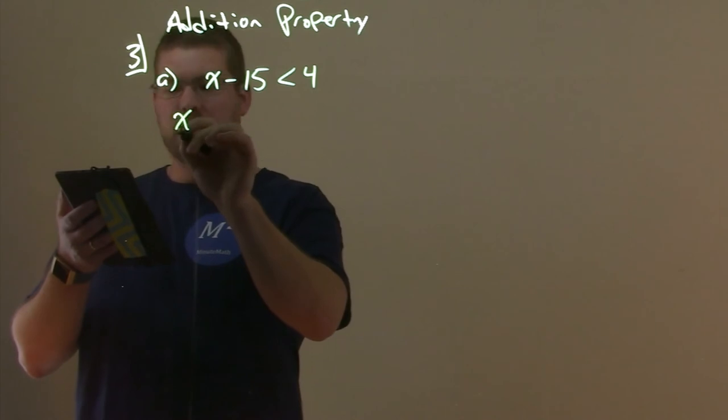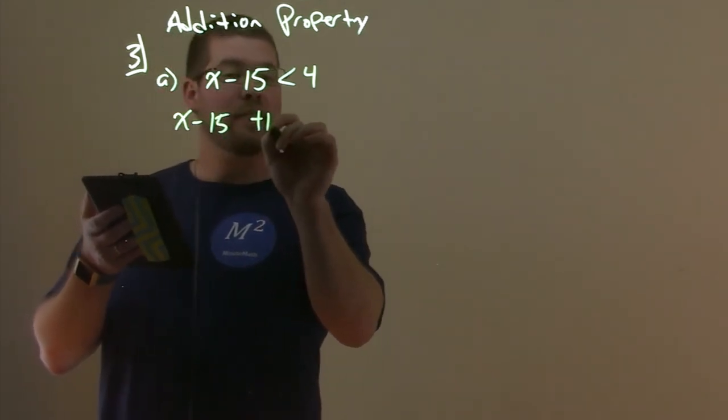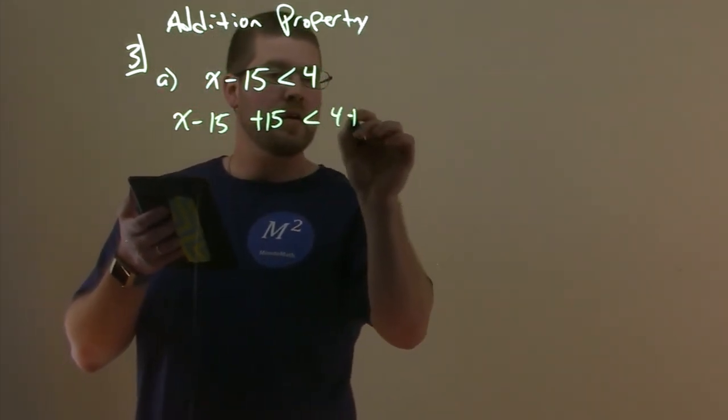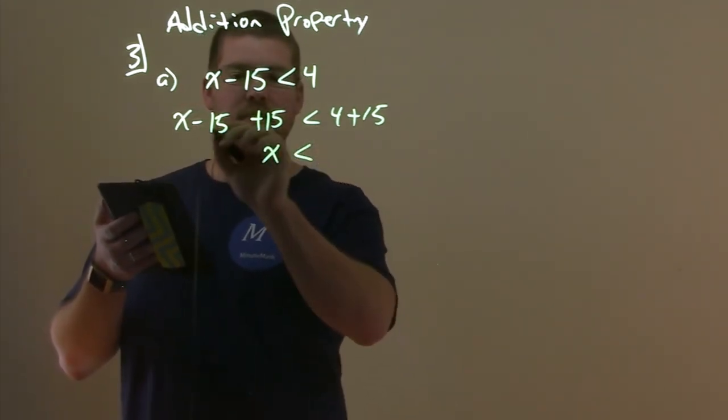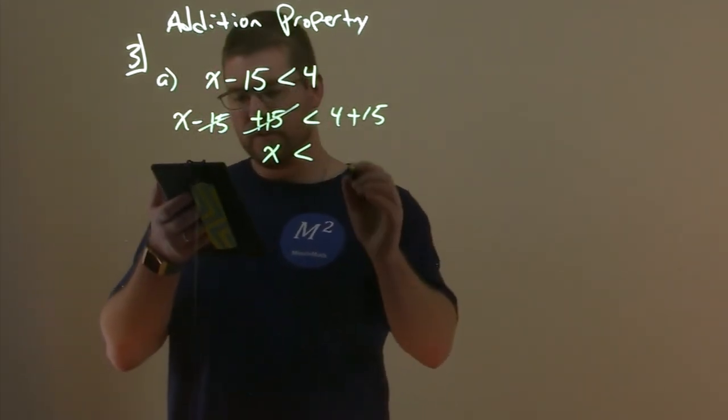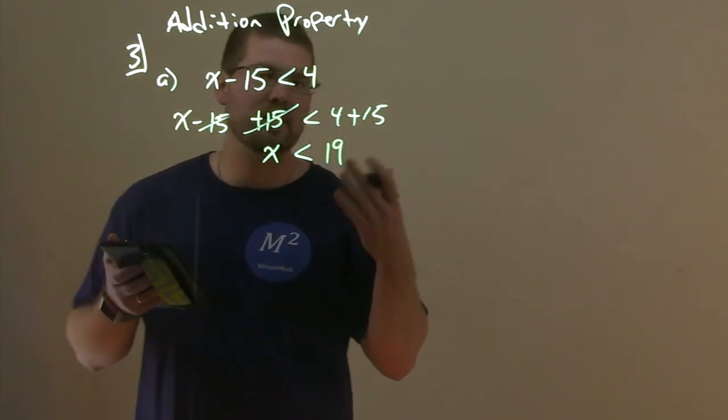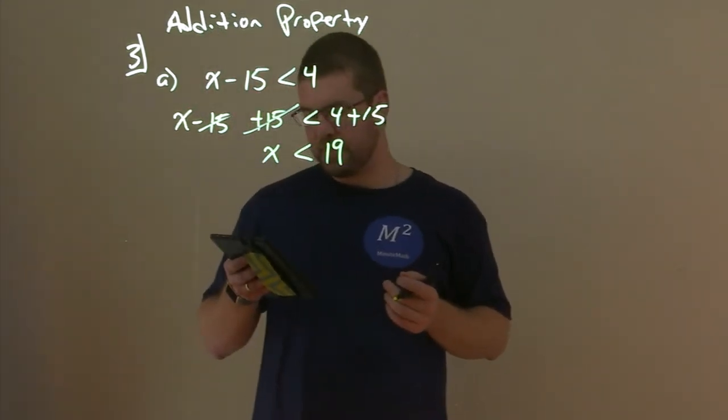So we have X minus 15, we can add 15 to both sides. That cancels out here, leaving us X by itself. And then 4 plus 15 is 19. So X is actually less than 19. Not too bad.